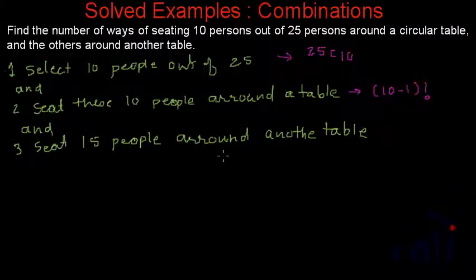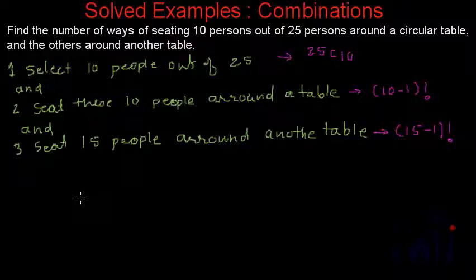And similarly, these 15 people can be arranged in 15 minus 1 factorial ways, and we have to perform all these steps one by one. That means the total number of ways in which 10 persons out of 25 can sit around a circular table and the rest of them can sit around the second circular table will actually be equal